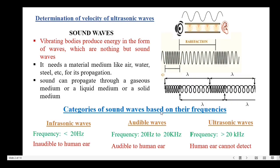Based on frequencies, sound waves are classified into three types: infrasonics, audible waves, and ultrasonic waves. Infrasonic waves are inaudible to the human ear and their frequency is less than 20 Hz. Audible waves have a frequency range of 20 Hz to 20 kHz — these are the only frequencies the human ear can hear. The third type, ultrasonic waves, are high frequency sound waves with frequency above 20 kHz, which the human ear cannot detect.